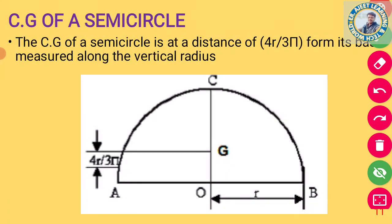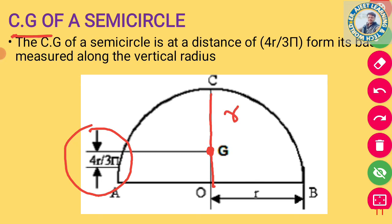Centroid and center of gravity of a semicircle: इसका CG होता है 4r/3π। अगर semicircle है और radius r है (base से edge तक), तो CG की distance base से 4r/3π होती है।